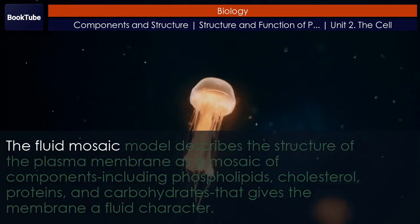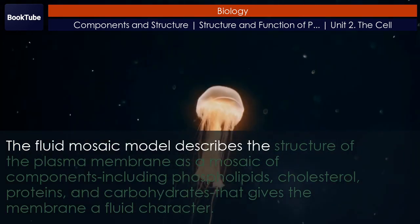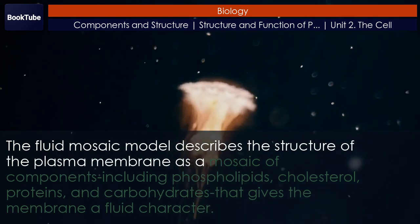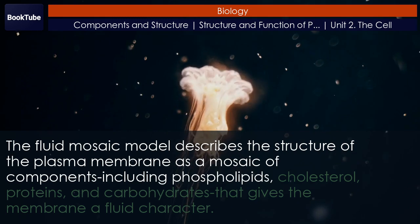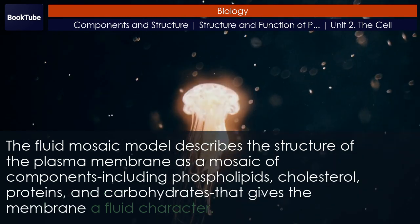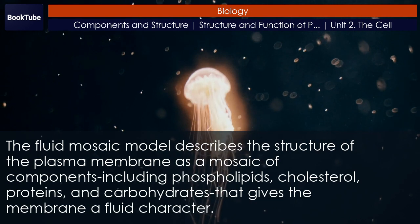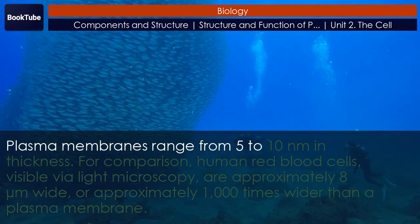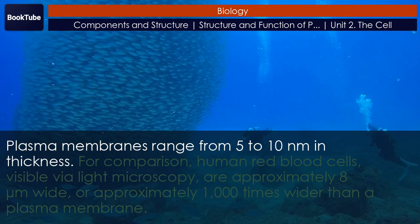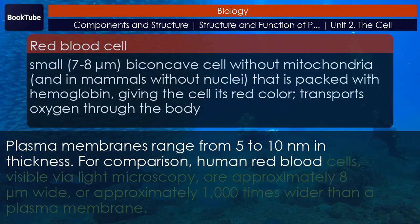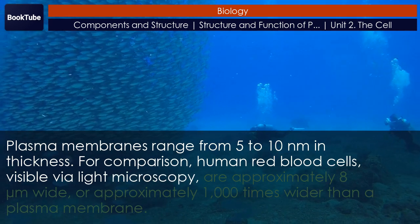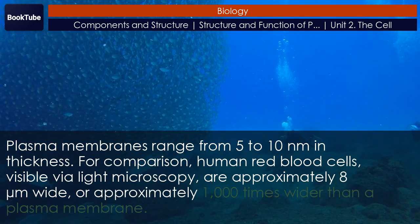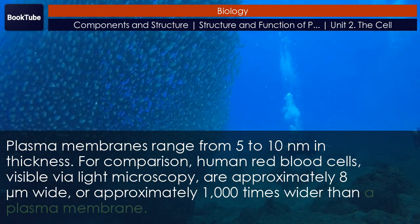The explanation proposed by Singer and Nicholson is called the fluid mosaic model. The model has evolved somewhat over time, but it still best accounts for the structure and functions of the plasma membrane as we now understand them. The fluid mosaic model describes the structure of the plasma membrane as a mosaic of components including phospholipids, cholesterol, proteins, and carbohydrates that gives the membrane a fluid character. Plasma membranes range from 5 to 10 nanometers in thickness.